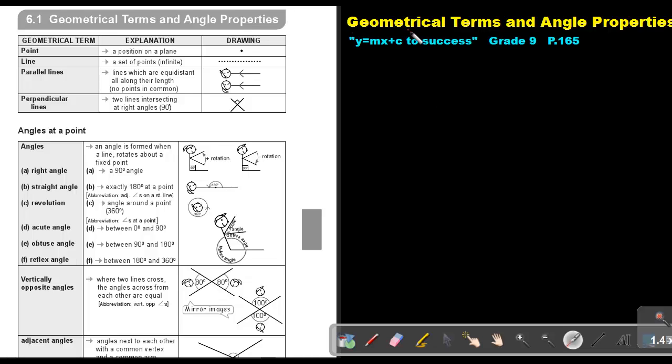Part 1: Geometrical Terms and Angle Properties. You will find this on page 165 in the Namibia Mathematics Grade 9 textbook Y equals Mx plus C to success. First we are just going to do a revision of Grade 8 geometrical terms.